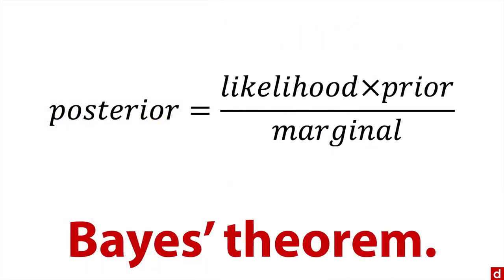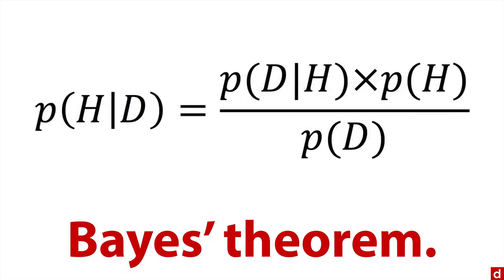If you want to write it as an equation, you can write it in words like this: posterior is equal to likelihood times prior divided by marginal. You can also write it in symbols: probability of H given D — the probability of the hypothesis given the data, that's the posterior probability — is equal to the probability of the data given the hypothesis (that's the likelihood), multiplied by the probability of the hypothesis, and divided by the probability of the data overall.